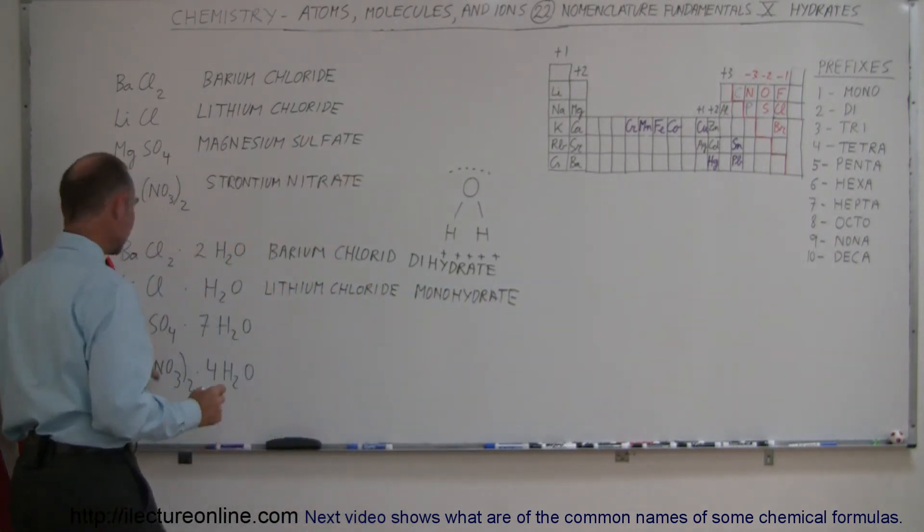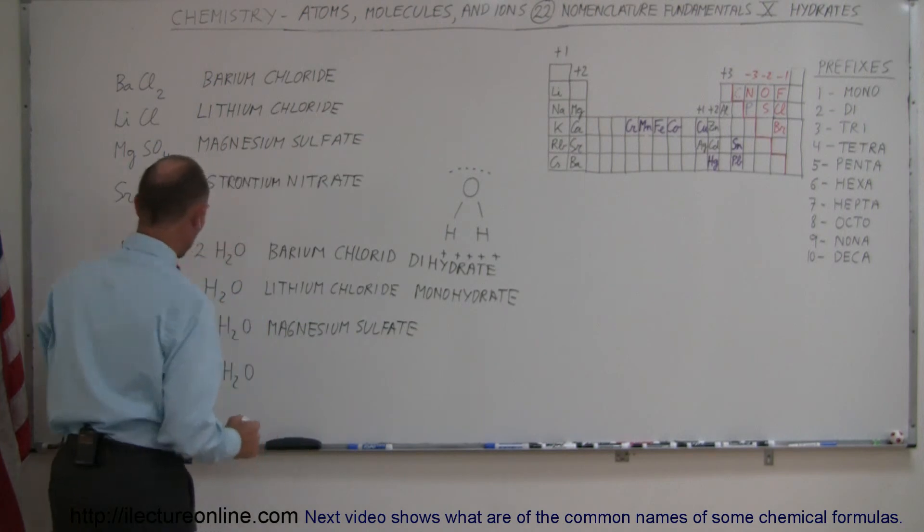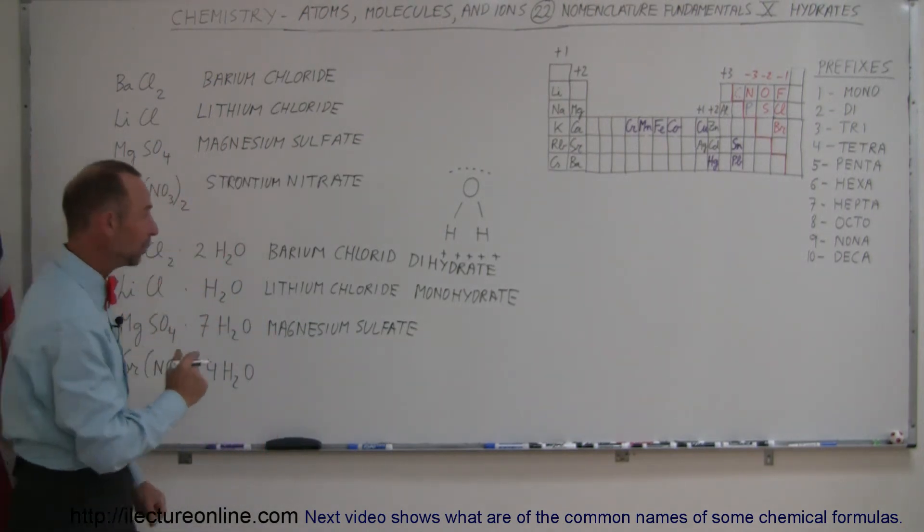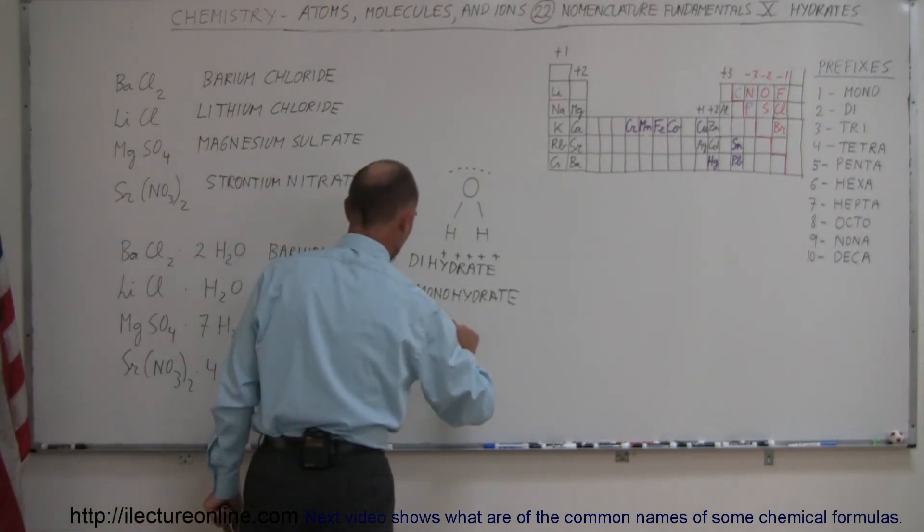And here we have magnesium sulfate, and it would join up with as many as seven water molecules in these weak polar bonds. And so we use heptahydrate to indicate that.